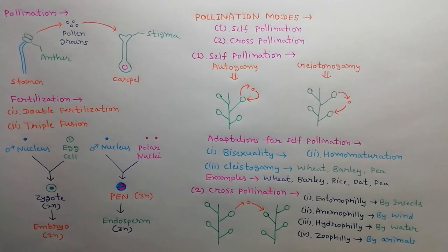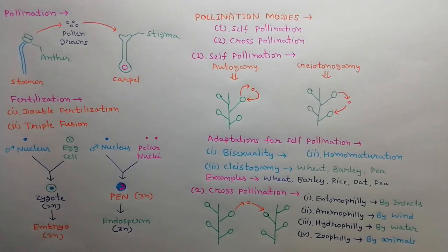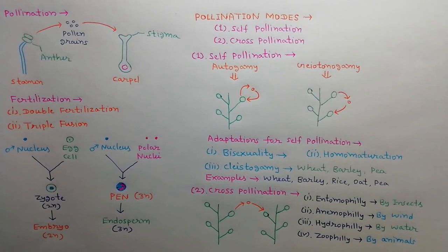Entomophily is pollination by insects. Anemophily is pollination by wind. Hydrophily is pollination by water. And zoophily is pollination by animals.